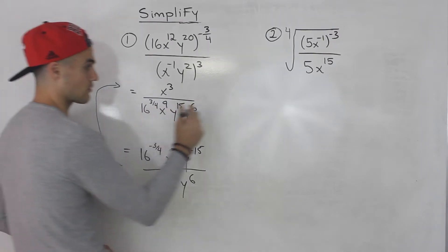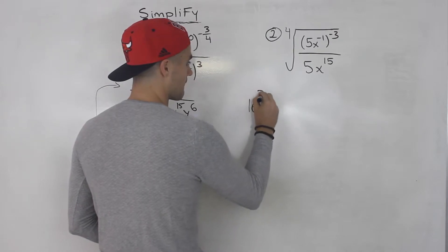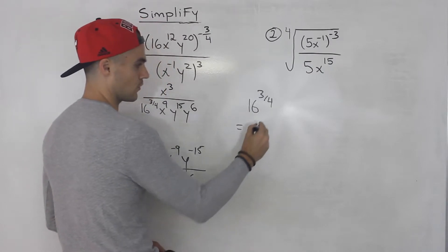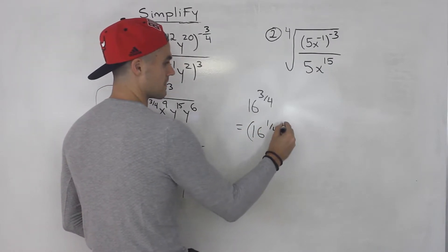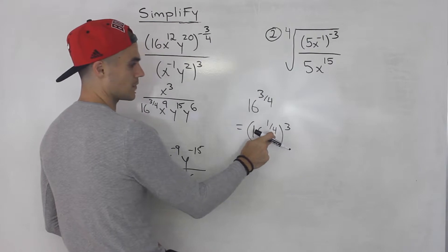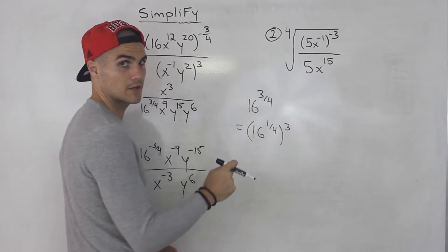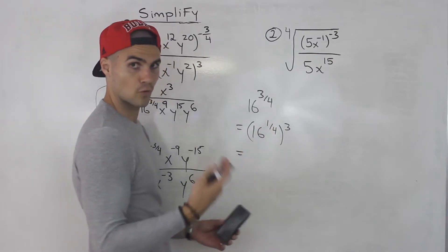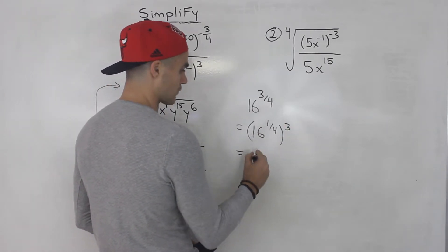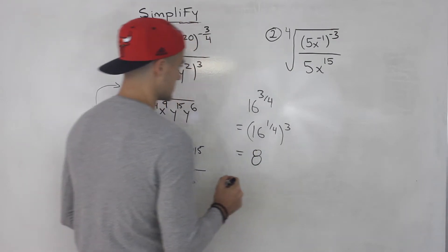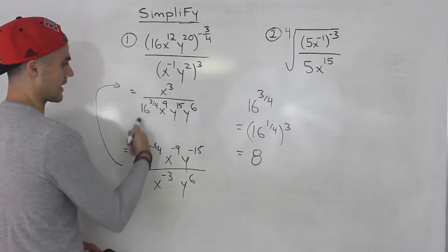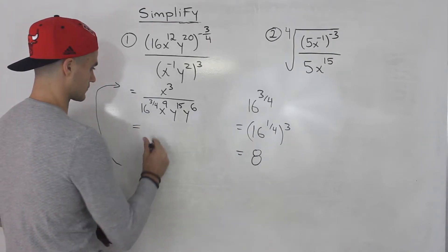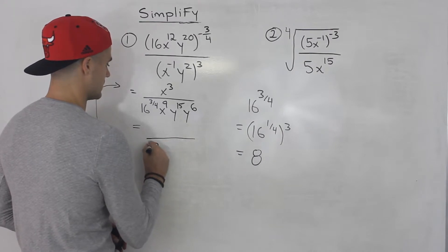Now this 16 to the power of 3 over 4 — let's work this out on the side. As I showed before, I like to split these up: put 1 over the denominator and then put the numerator on the outside. So 16 to the power of 1 over 4 is like the 4th root of 16, which is 2. Then 2 to the power of 3 is 8. So 16 to the power of 3 over 4 ends up being 8, and we'll be left with 8 at the bottom.